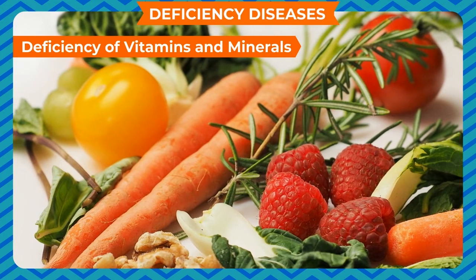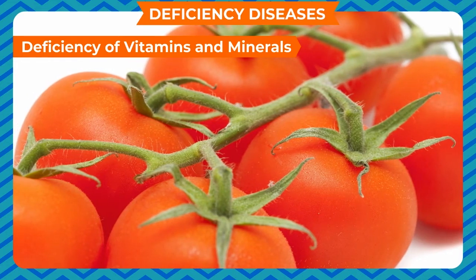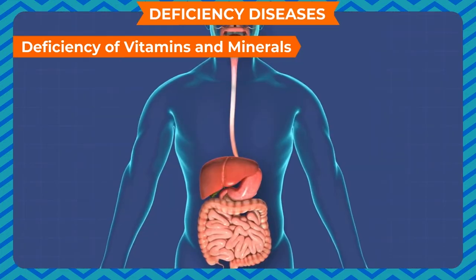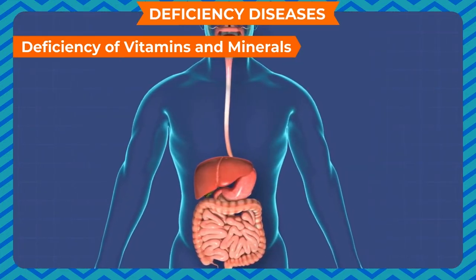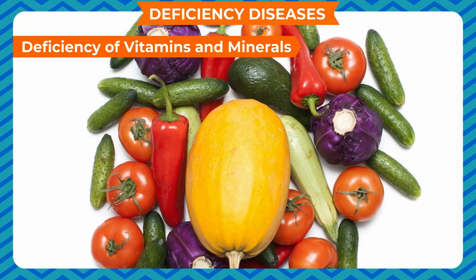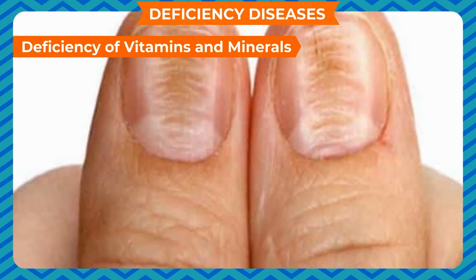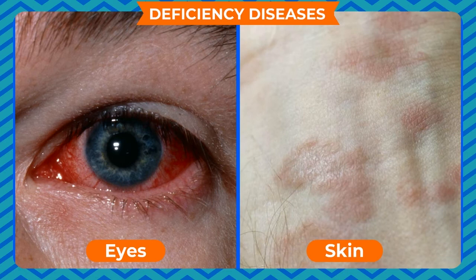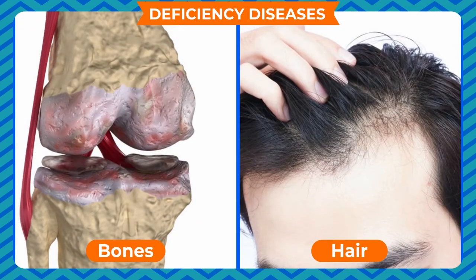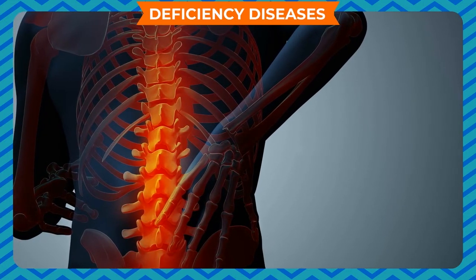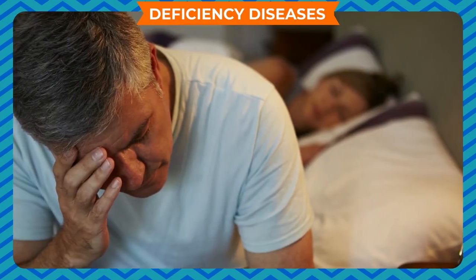Vitamins and minerals are essential substances our body needs but cannot manufacture; therefore their requirement can only be met by the food we eat. Vitamins are necessary for the normal development and functioning of body systems and regulate body activities. Each vitamin is needed for a specific purpose. Deficiency of one or more vitamins leads to deficiency diseases that can affect eyes, skin, bones, hair, and general growth of the body. Minerals are also needed by the body in very small amounts, supplied through food in the form of salts. Deficiency of minerals causes deficiency diseases, and overdose of vitamins and minerals also results in toxicity.